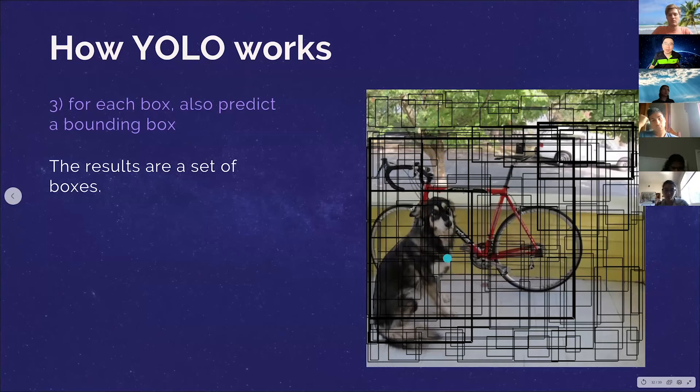So once we have these boxes, right, we predict a whole bunch of bounding boxes. Remember for each single grid, we can have 10 different bounding boxes and we have to adjust them. So we have, each one of them we know whether it has objects or not, right? And we have these bounding boxes.